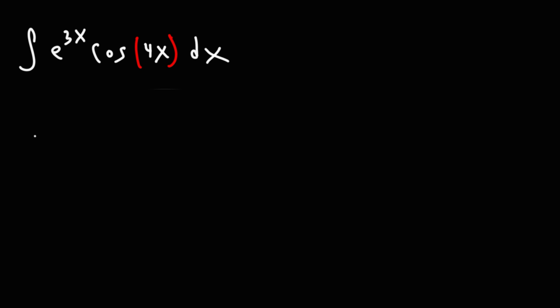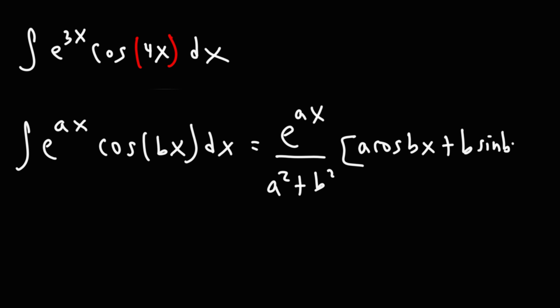And here it is. The integral of e to the ax times cosine bx is equal to e raised to the ax divided by a squared plus b squared, times a cosine bx plus b sine bx, and then plus the constant c.